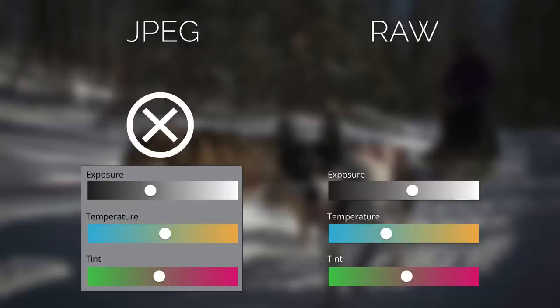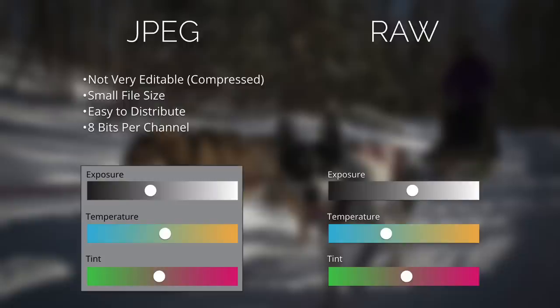JPEG isn't all bad. Like we talked about, it's not very editable because those files are compressed. The good news is that the files are small, they're compatible with a lot of phones and computers, they're easy to distribute, and the colors are restricted to 8 bits per channel.